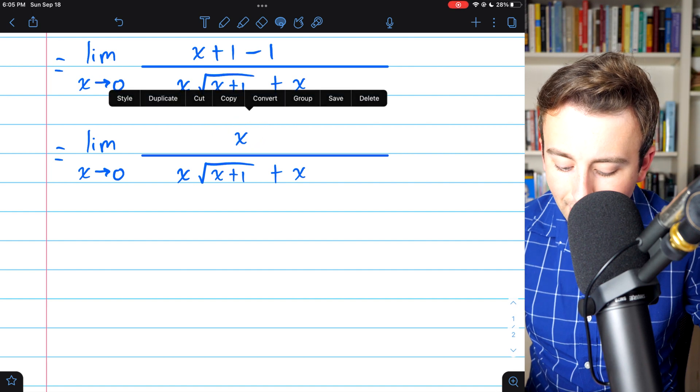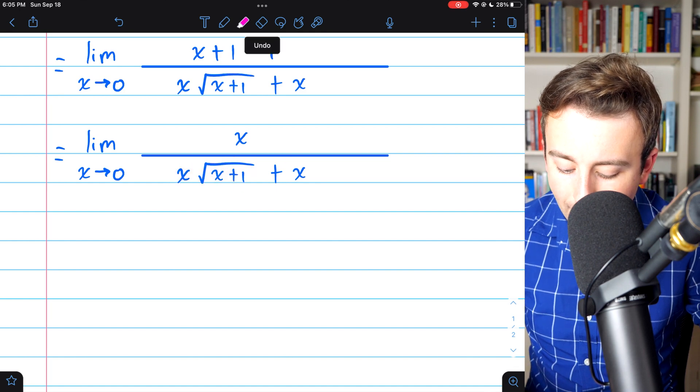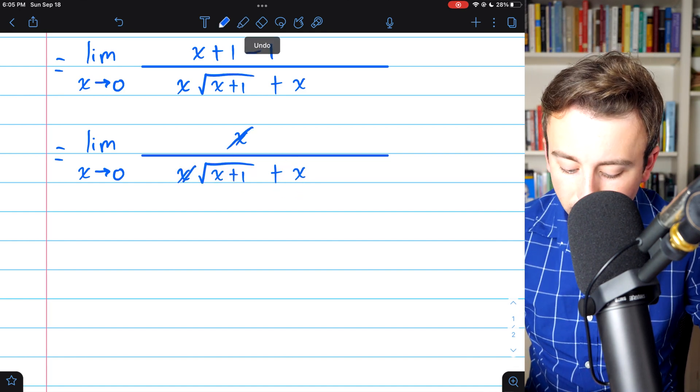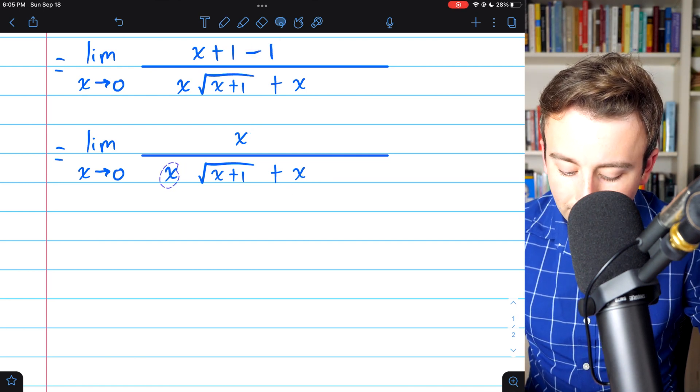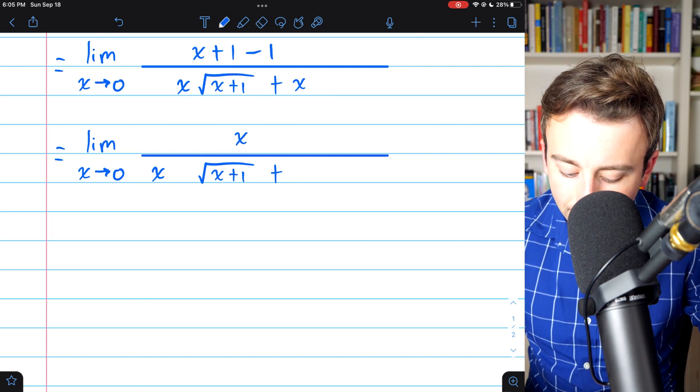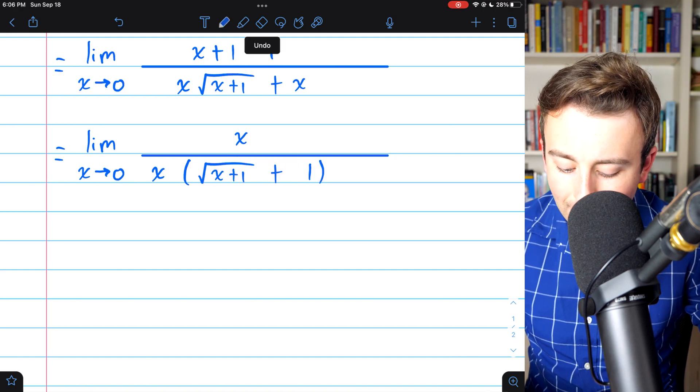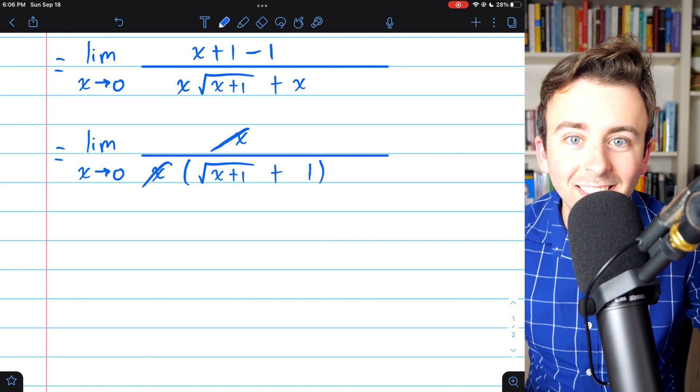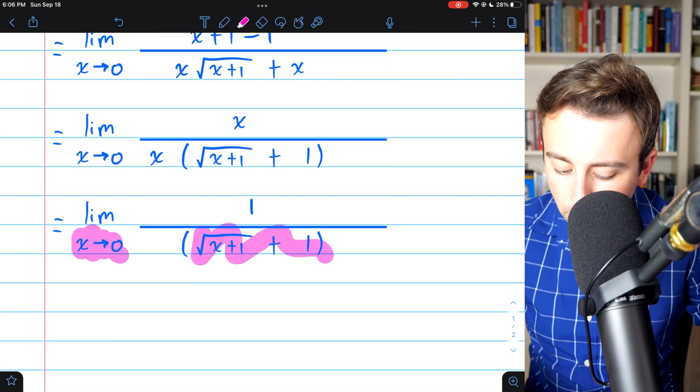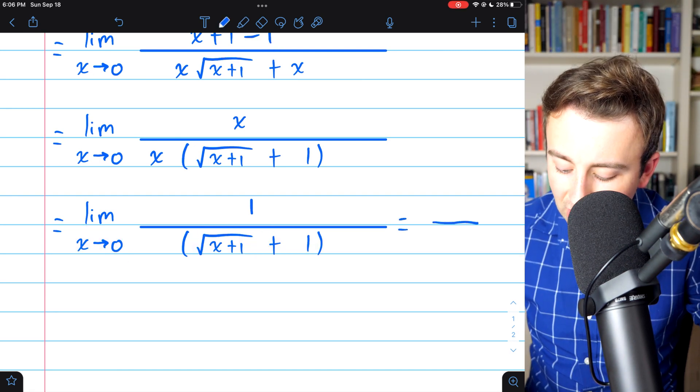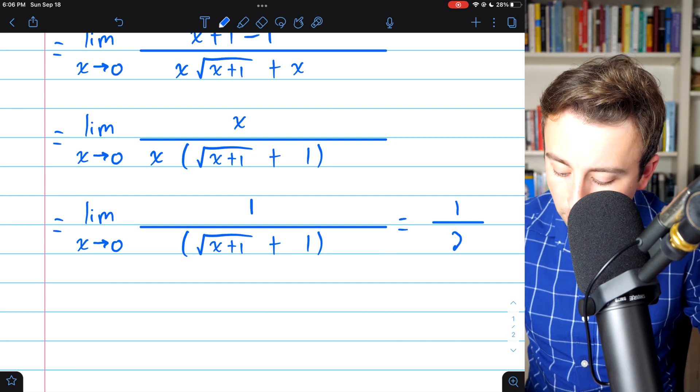Now, in the denominator, we can factor out an x. We've got an x in this term and an x in this term. So at this point, we could just cancel out that factor of x. I'll go ahead and just write it to make sure that it's really clear what's going on here. We're factoring out an x, and so this turns to x multiplied by root x plus 1 plus 1. And now, we can cancel out those x's. And now we've got a limit we can evaluate by substitution. If we just plug x equals 0 into this expression, we are going to get 1 divided by the square root of 1 plus 1, or in other words, 1 half.